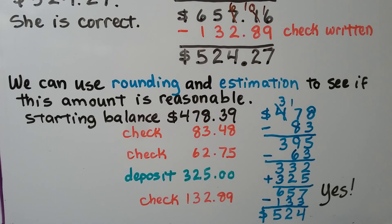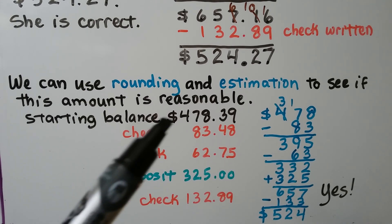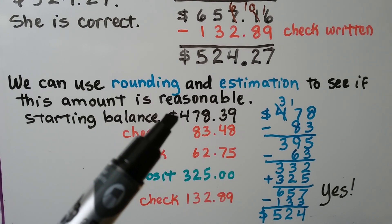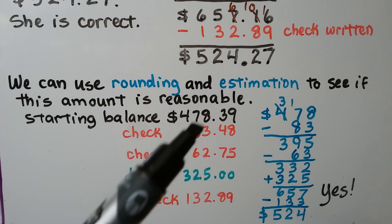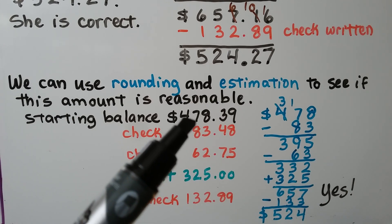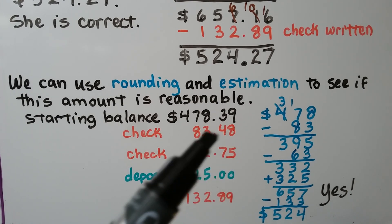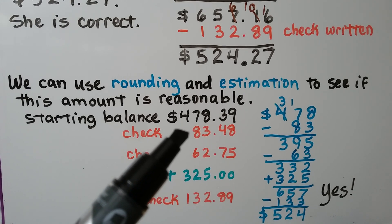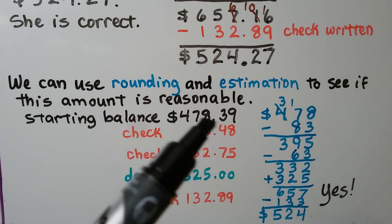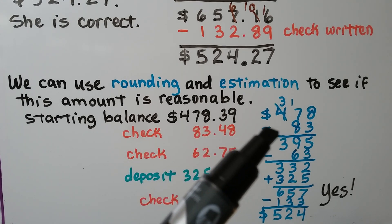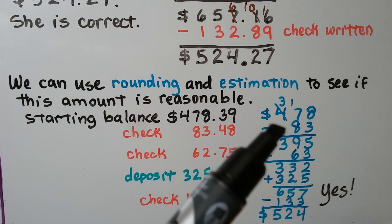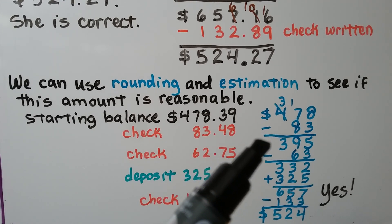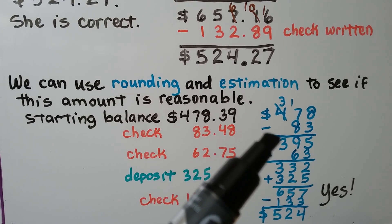We can use rounding and estimation to see if this amount is reasonable. The starting balance was $478.39. We round to the nearest dollar, which is $478. We round $83.48 to the nearest dollar — the four tells the three to stay the same — so we subtract $83 and get $395.